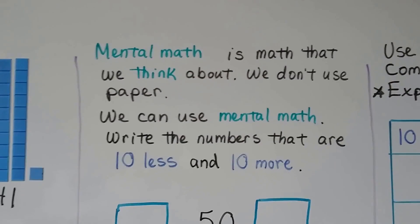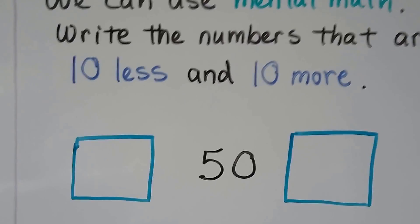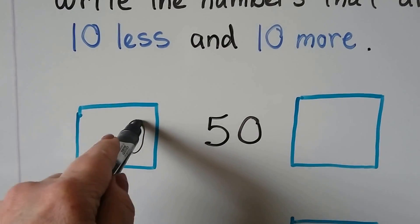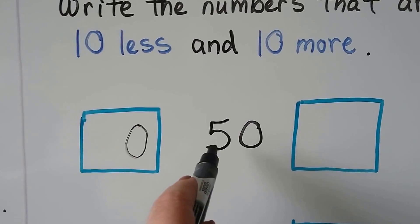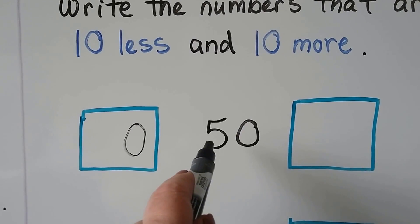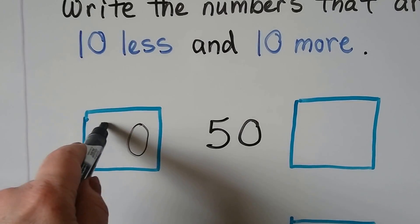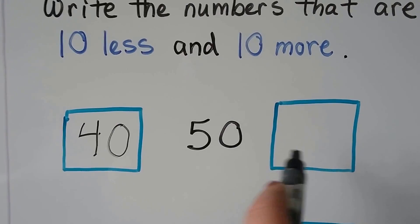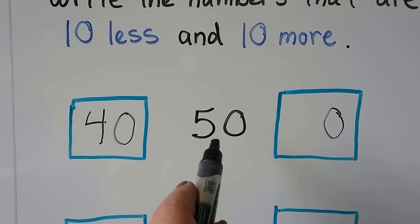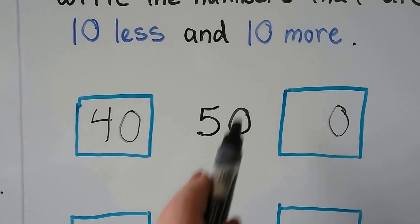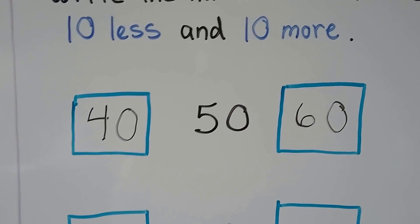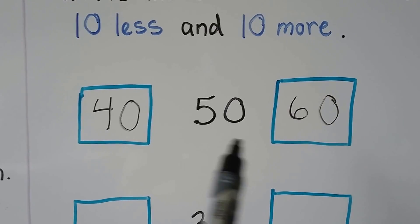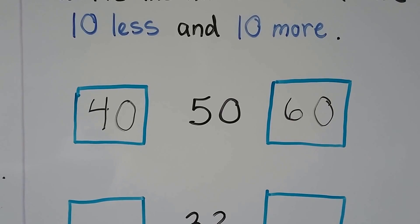Write the numbers that are 10 less and 10 more. So we need to find the numbers that are 10 less and 10 more than 50. The ones place is going to stay the same. For 10 less, there's going to be 1 less 10 — 1 less than 5 is 4, so 10 less than 50 is 40. For 10 more, there's 1 more 10, so that would be a 6 — it would be 60.